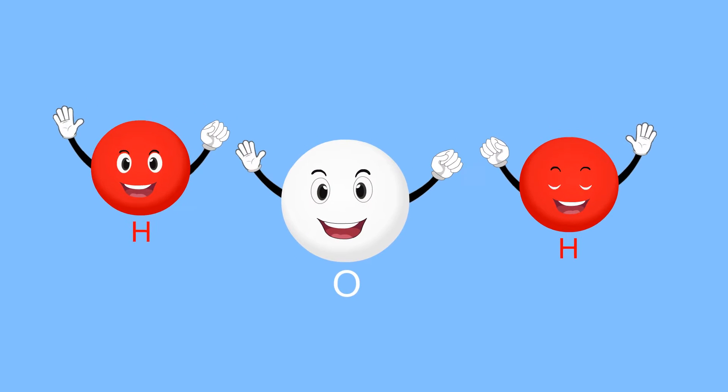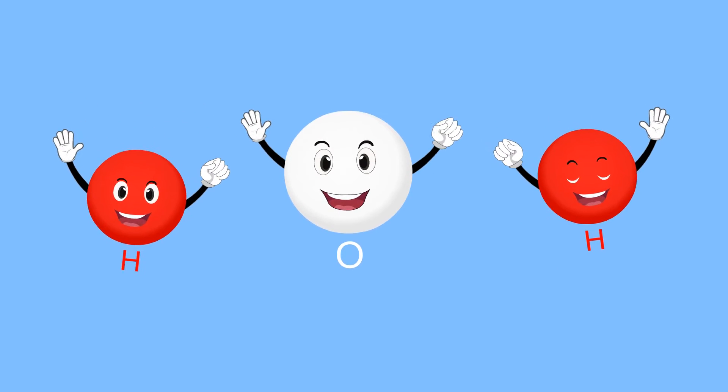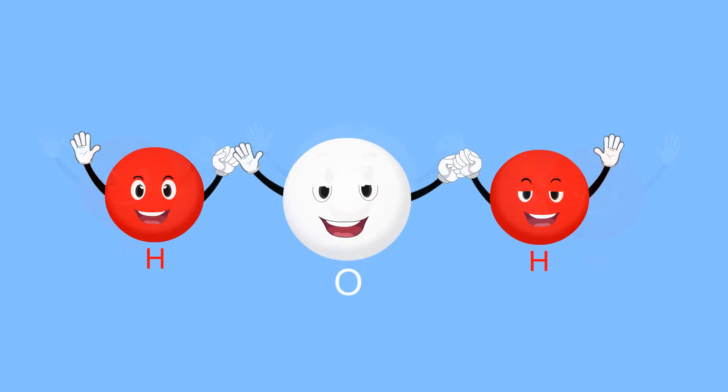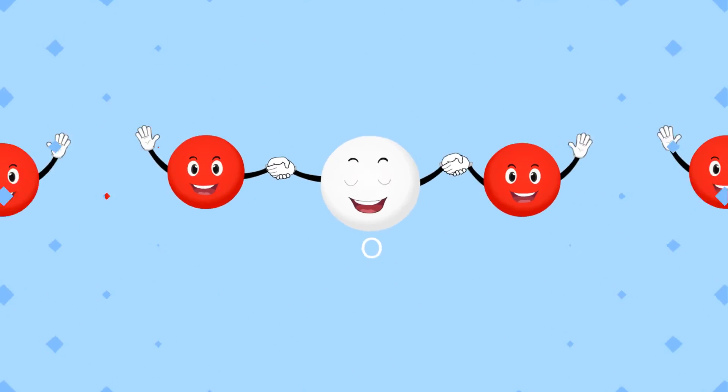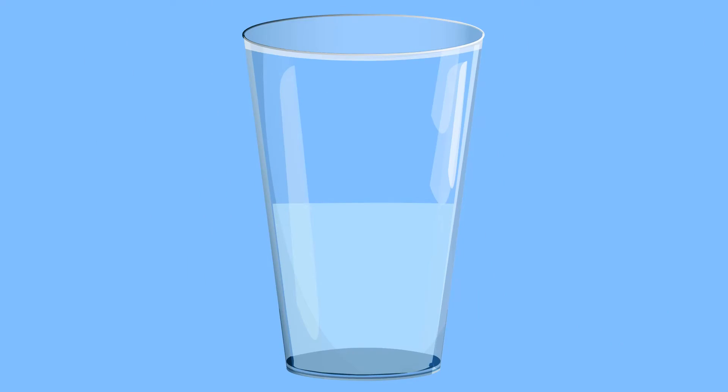Water is a mix of two elements, hydrogen and oxygen. Two hydrogen atoms join with one oxygen atom to form a bond which makes water.